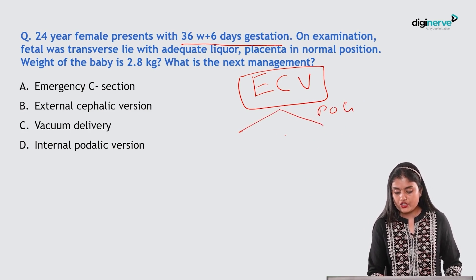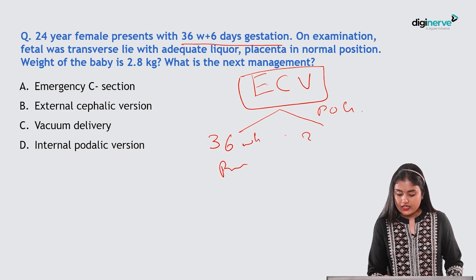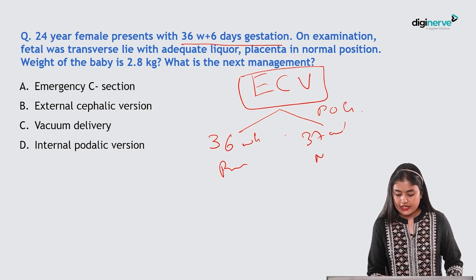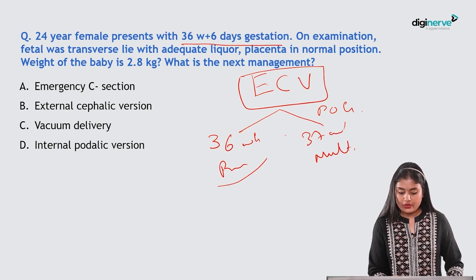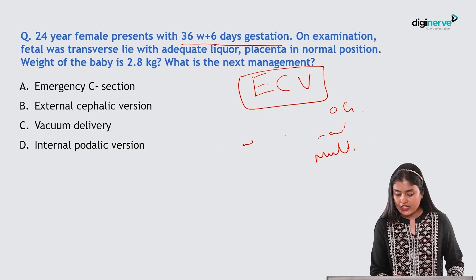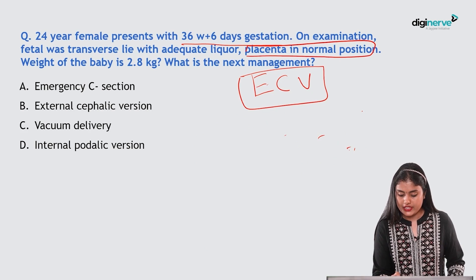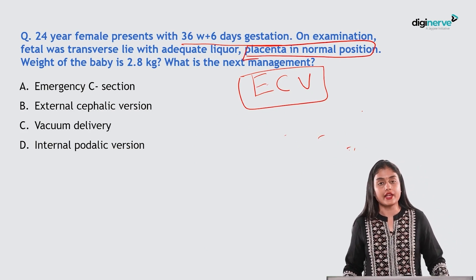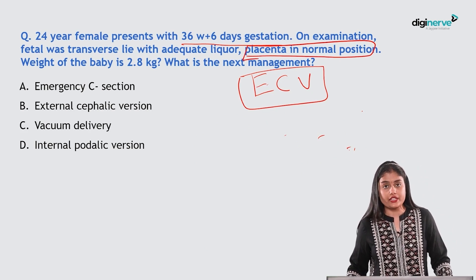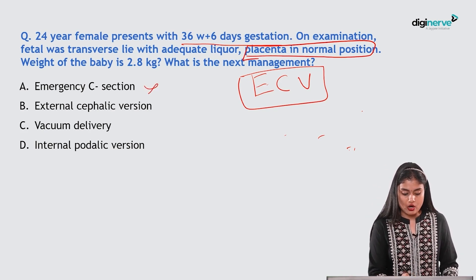ECV is performed at around 36 weeks in primigravida and 37 weeks in multigravida. Since this case has no placenta previa and adequate liquor, ECV can be performed safely to aim for vaginal delivery.